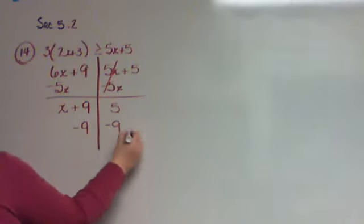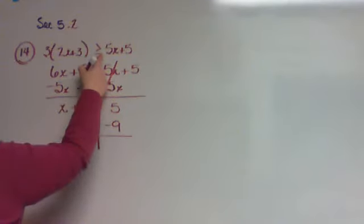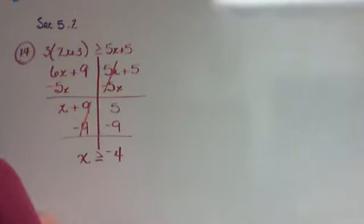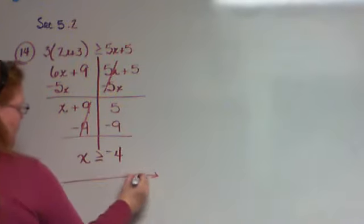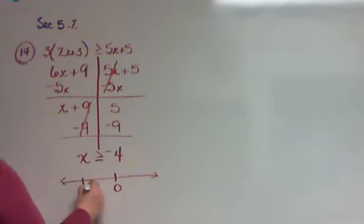Subtract 9 from both sides, and we end up with x, using the same sign, negative 4. So I got a zero, and this time negative 4 is over here. Open circle or closed circle? Closed circle, because it's got that line underneath it. To the left or to the right? To the right because it points to the right.